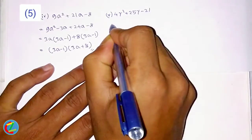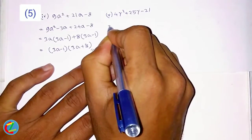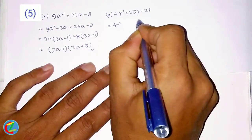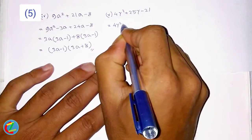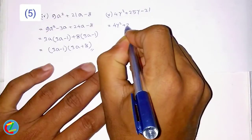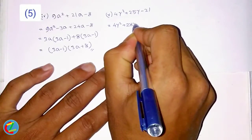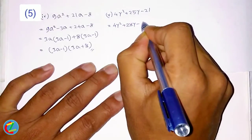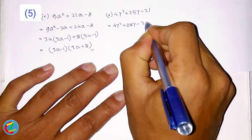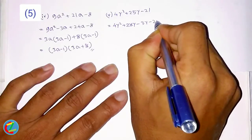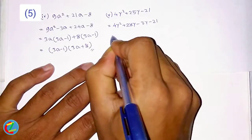4y squared plus 25y minus 21. The terms: 24y squared, then 25y, breaking into 28y minus 23y, and minus 21.